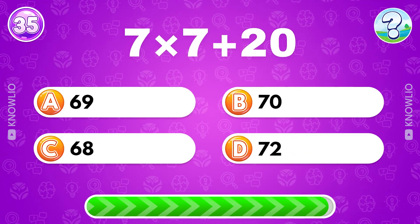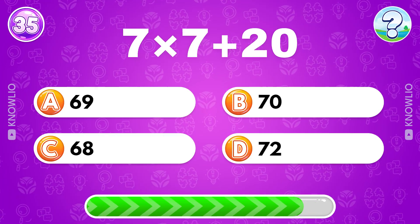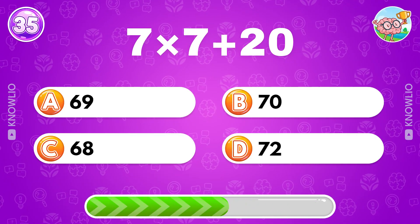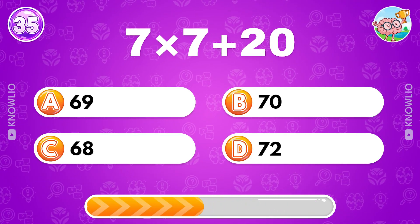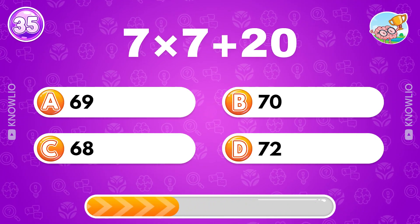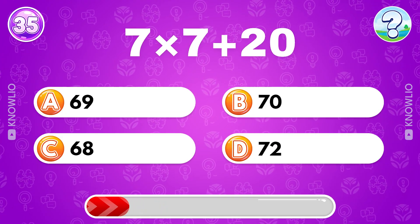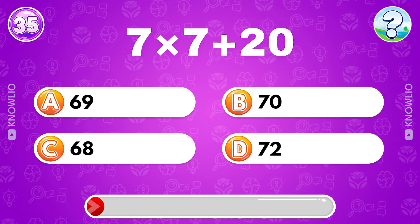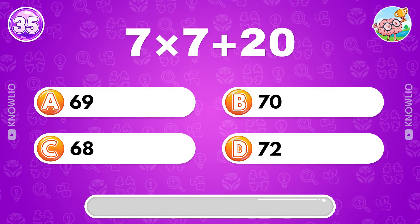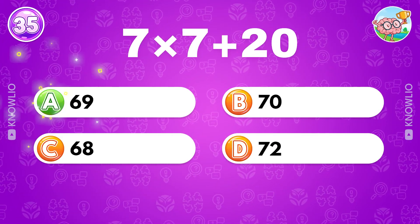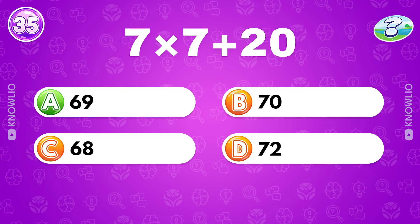7 multiplied by 7 plus 20? Answer A: 69.